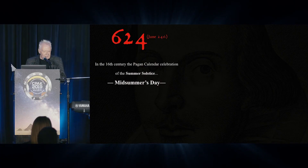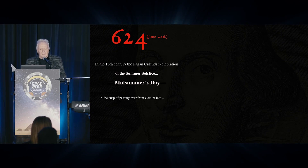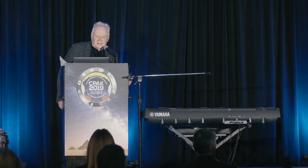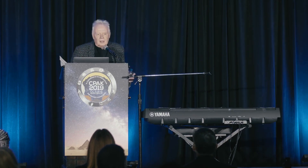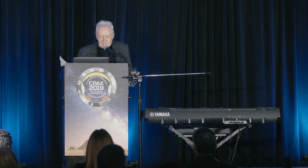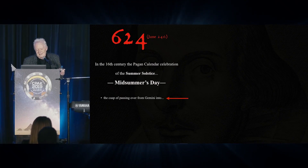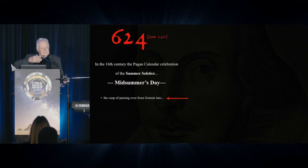Midsummer's Day — 6-24. Midsummer's Night was the biggest celebration in England, and that was 6-23, when they had the revels and the partying and the dancing. And the next morning, 6-24, it's like 'oh, I'm sorry, we won't do it again' — they all go to church. And they did, because it was the feast day of St. John the Baptist. So the next day they had the religious day. It's always done that way — Saturday night, Sunday morning.